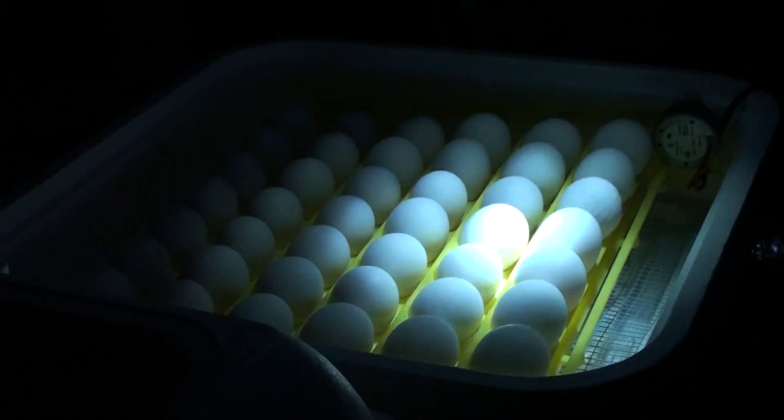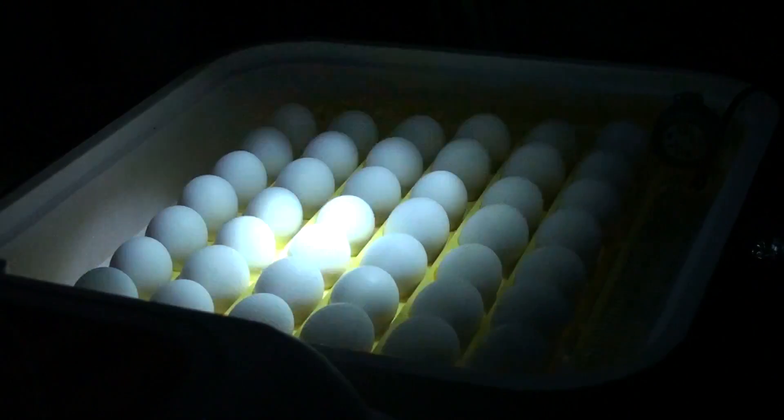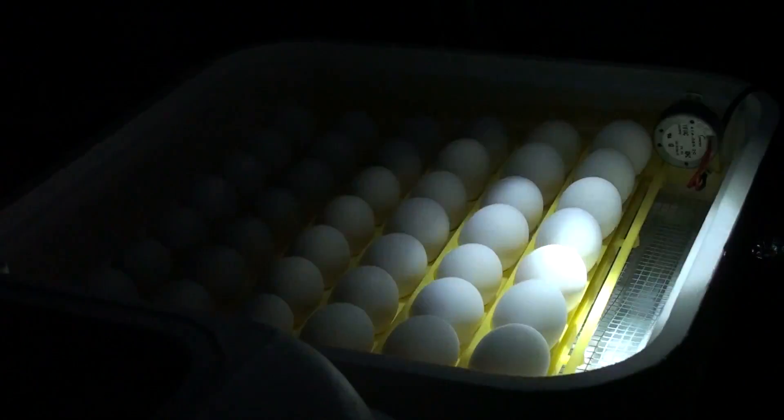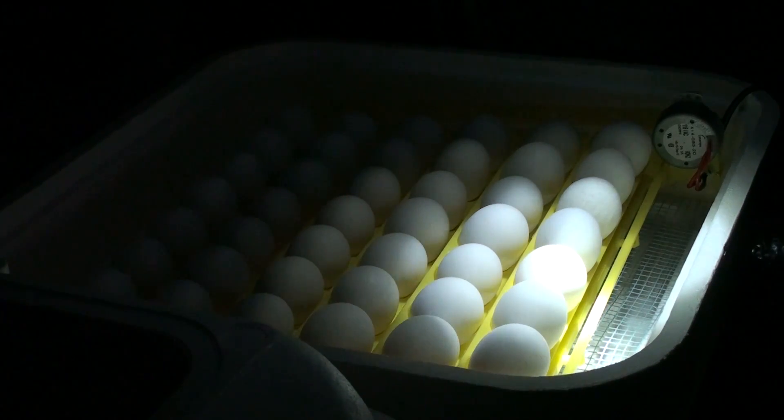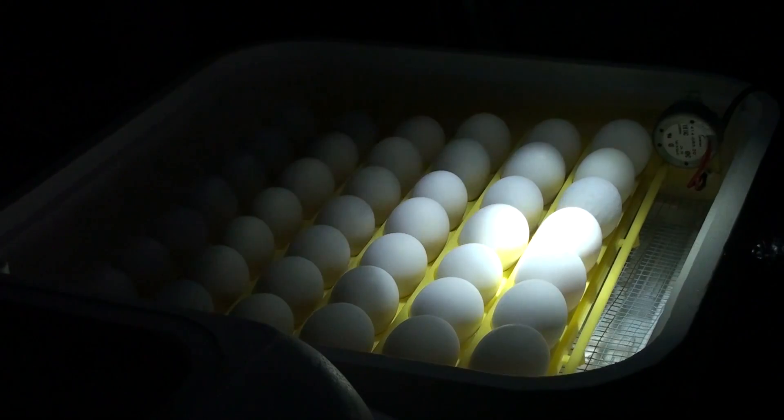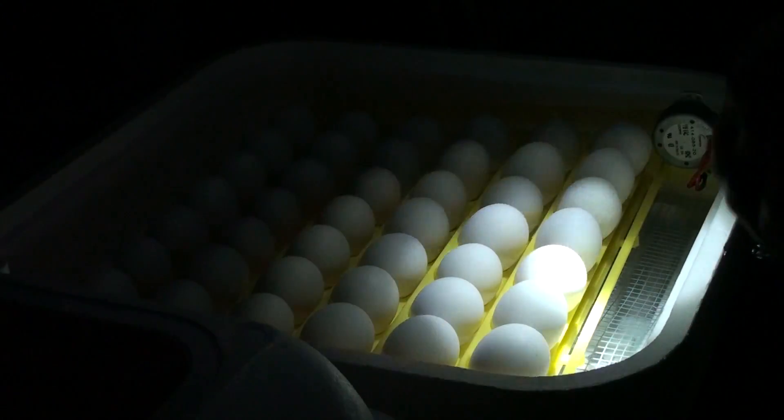There's three different types that we may see in here. In the classrooms we call them winners, quitters, and yokers. Winners are ones that are fertilized and still actively growing. Quitters are those that have died through the process of the last seven days, and then yokers are ones that were never fertilized from the very beginning.